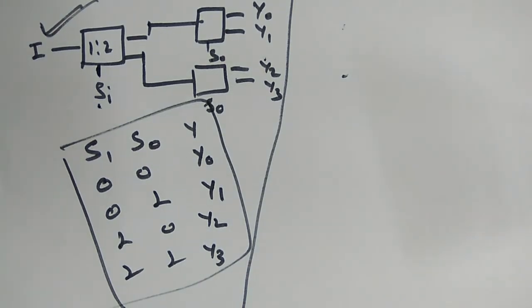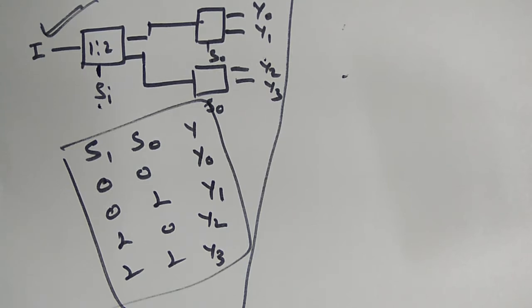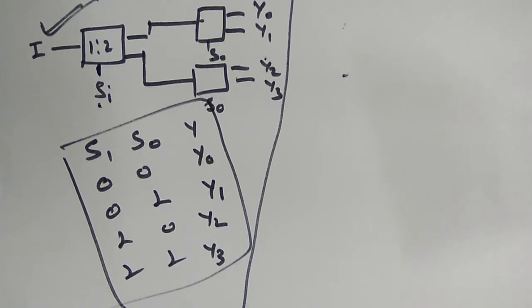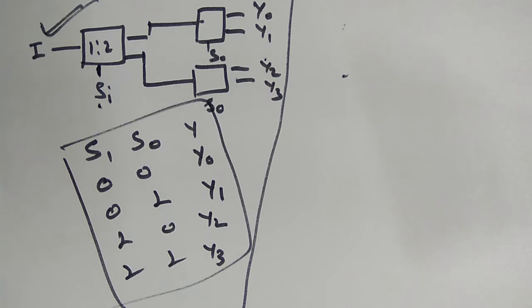Then we will move to the next topic called decoder. The demultiplexer is similar to the multiplexer so I am not doing anything more. Also, unlike MUX, the DEMUX has only one input so we cannot use it as a universal gate. That is enough for DEMUX, and then we will move to decoder and then encoder.